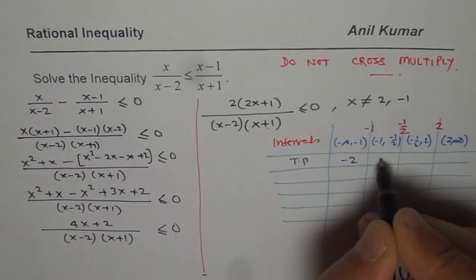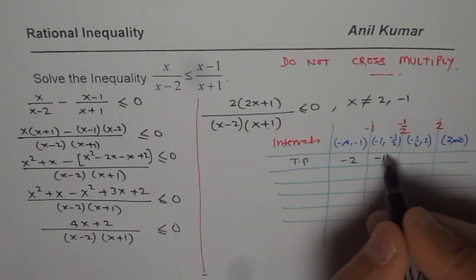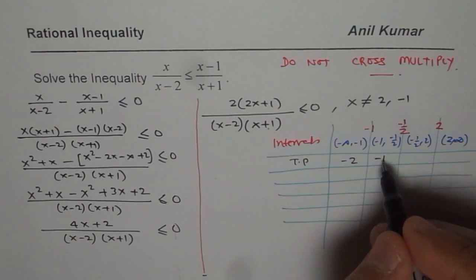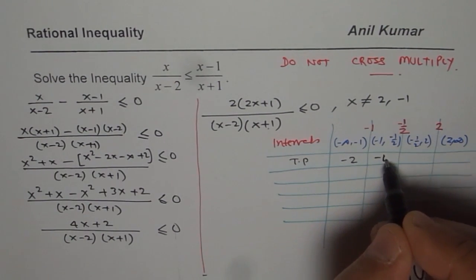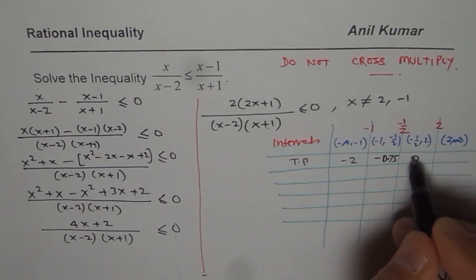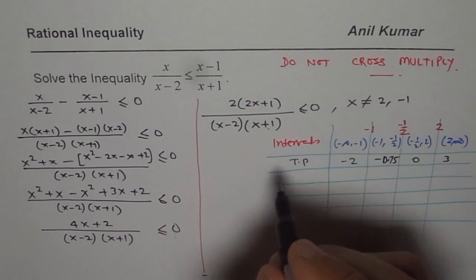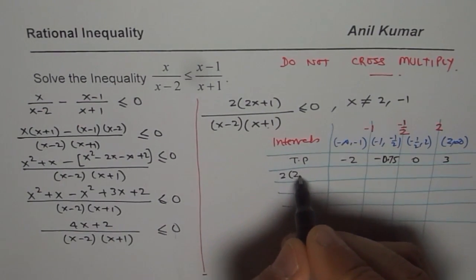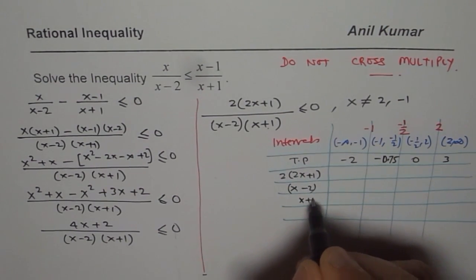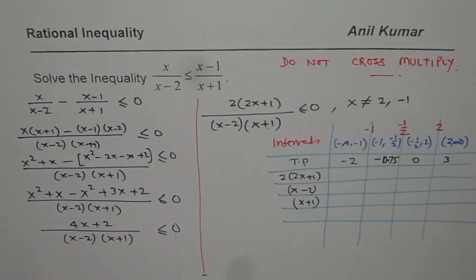So minus 2 would be a good point. Between more than minus 1 but less than minus half means minus 0.75. That is a good value. And then here is 0, and then 3. So the factors are 2 times 2x plus 1, x minus 2, and x plus 1. So let us write down their signs, one by one.